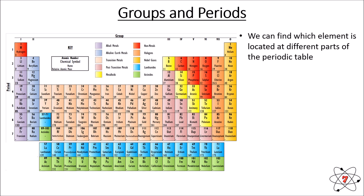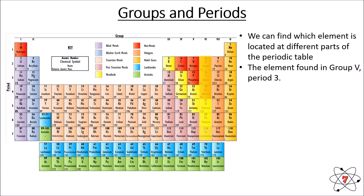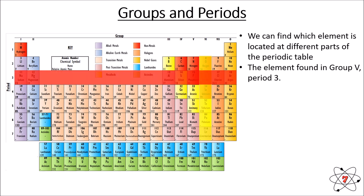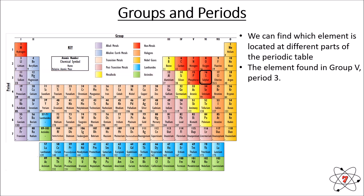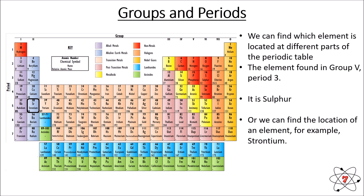We can find which element is located at different parts of the periodic table. For example, find the element in group five, period three. Group five going down, starting with oxygen; period three going across, starting with sodium. Where the group and period intersect we find our element — in this case it is sulfur. So group five, period three is sulfur. We can also find the location of an element — for example, strontium is highlighted; which group and which period is it in?